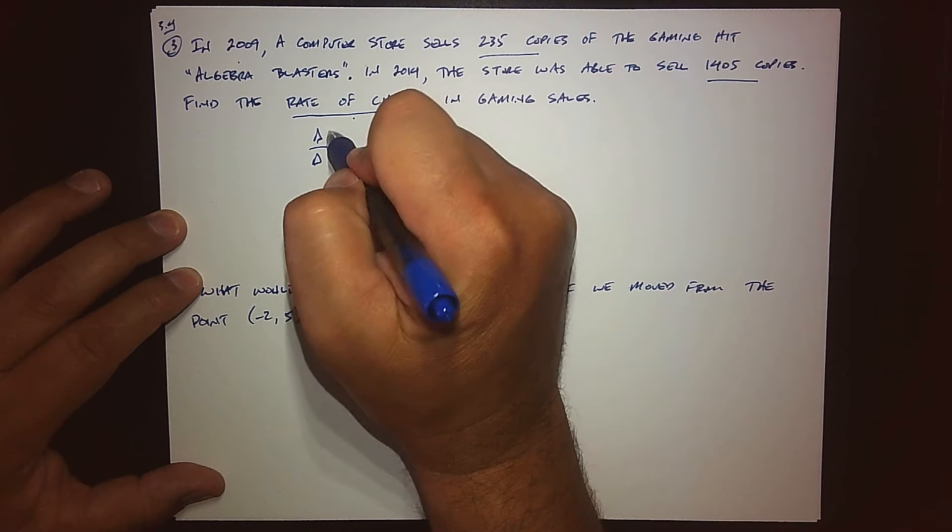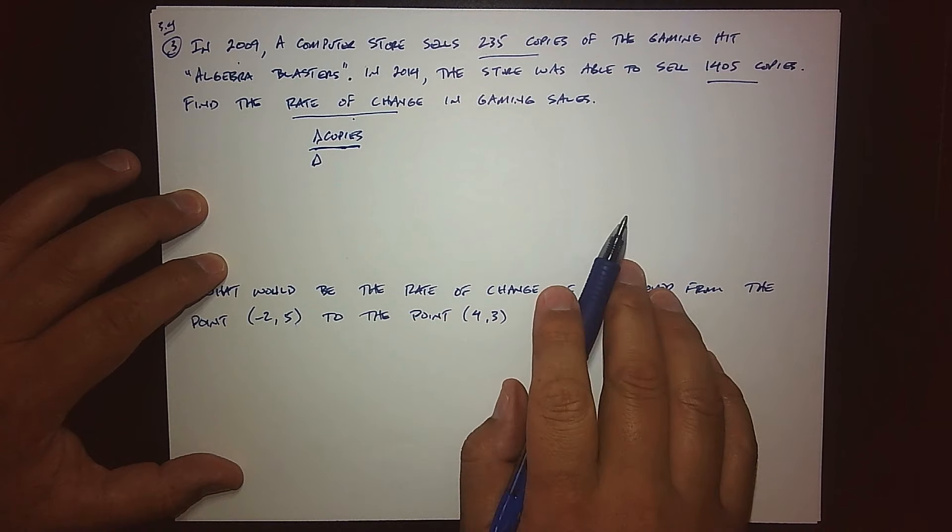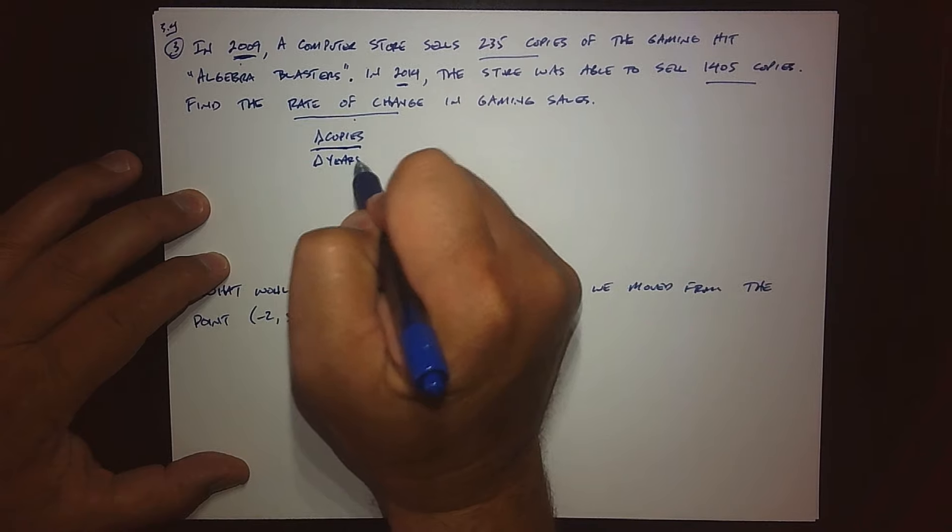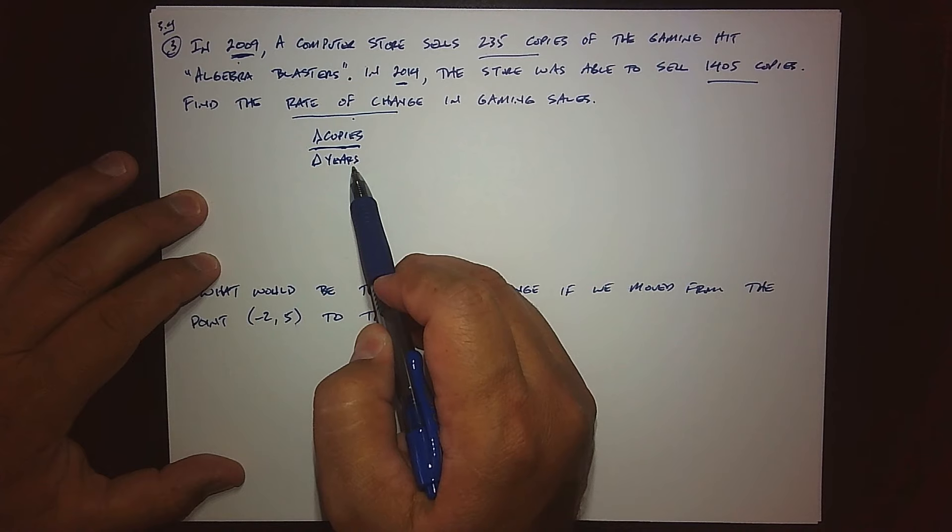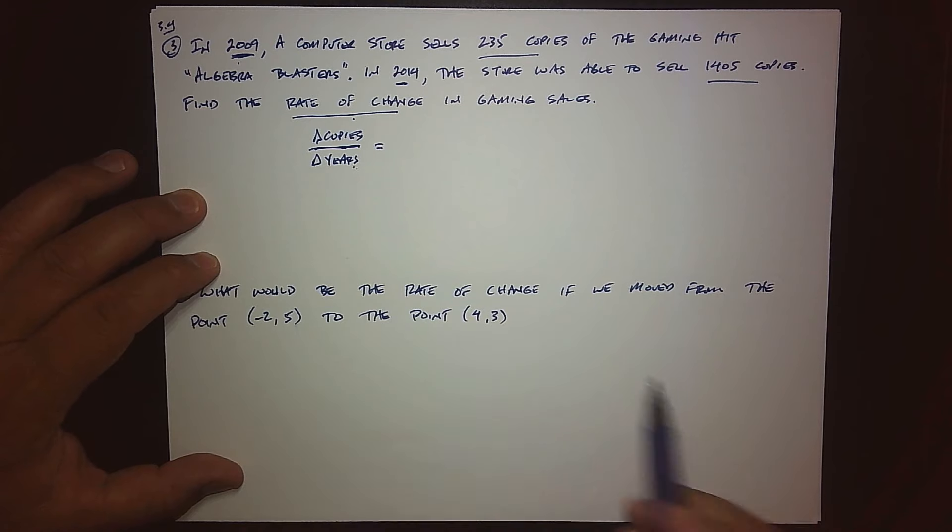Because remember what a rate of change is - how are two quantities changing? So what quantities are changing here? Well, one of the things I can clearly see is the change of copies. So the change in copies is one of the things that's changing from one year to the next. And if you listen real closely, that's the other changing quantity - we're starting at 2009 and going to 2014.